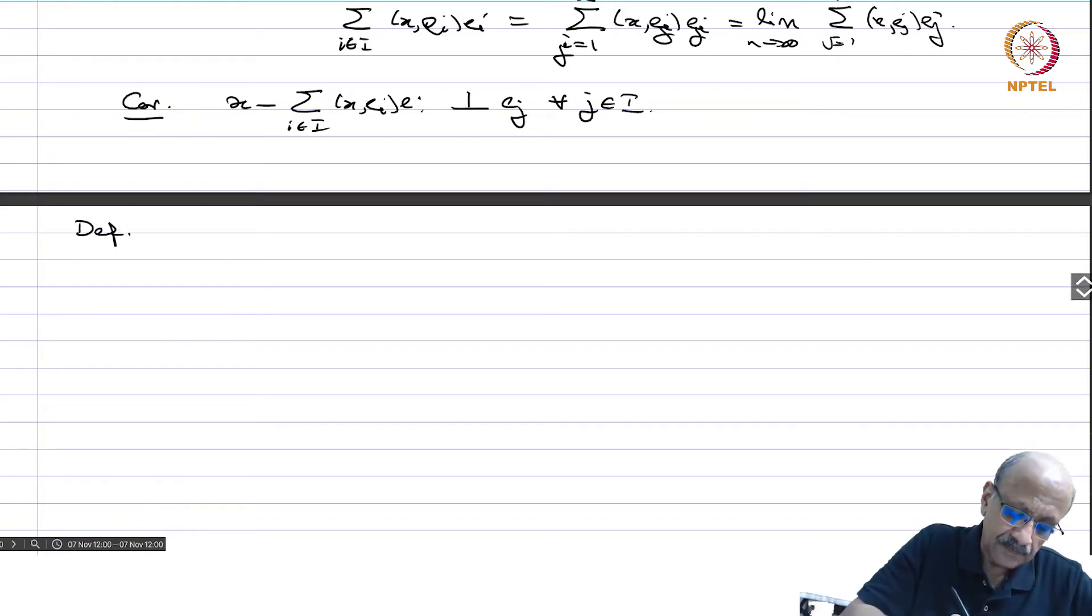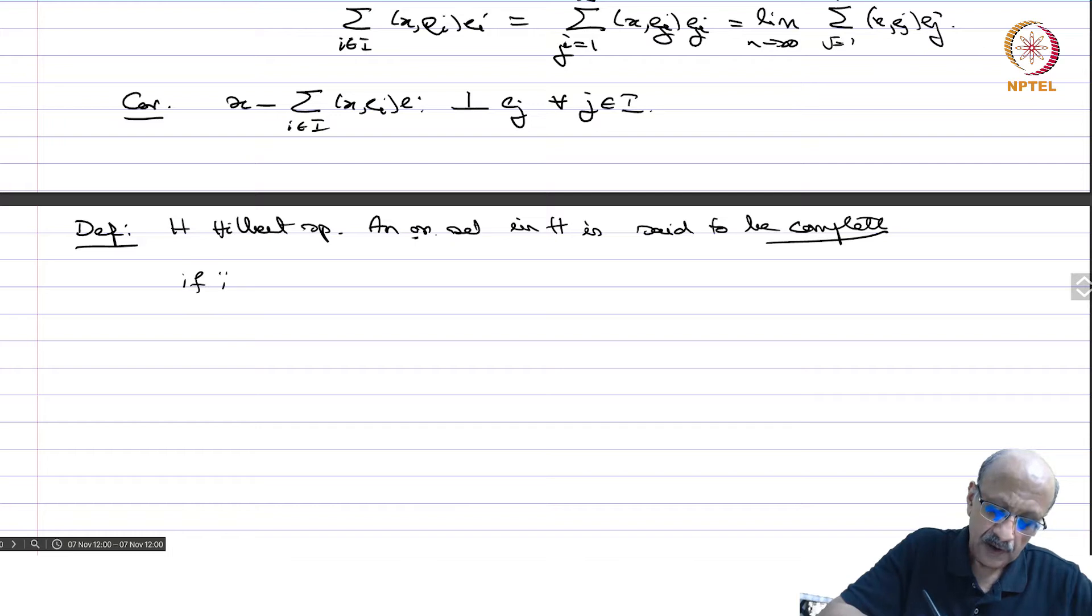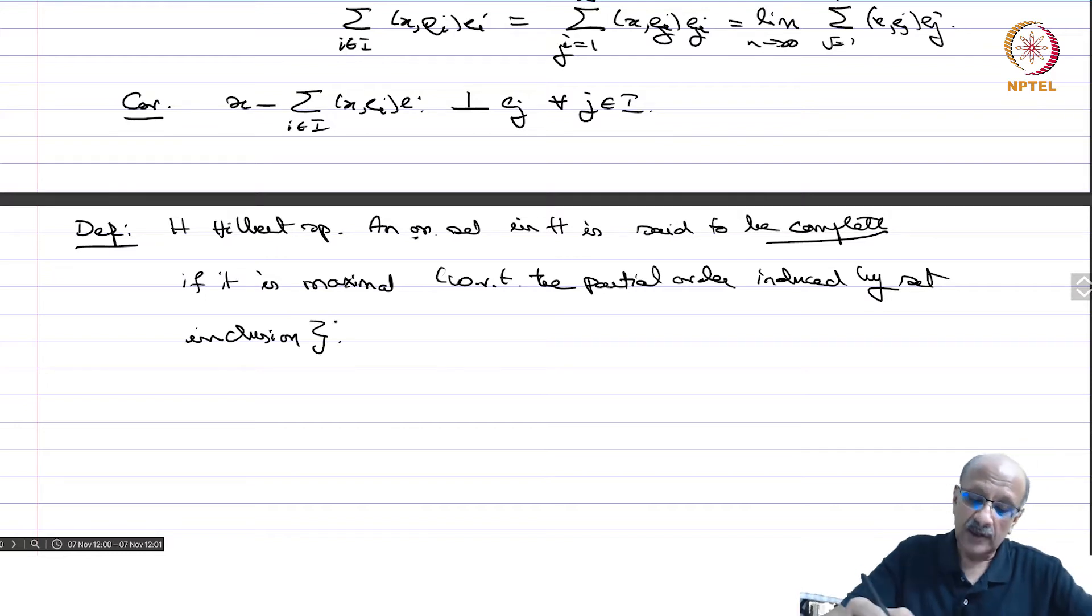So, now definition. H Hilbert space, an orthonormal set in H is said to be complete if it is maximal, of course, with respect to the partial order induced by set inclusion.